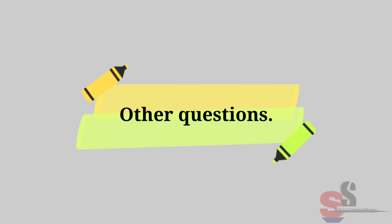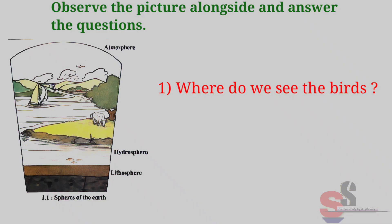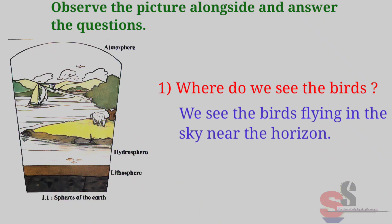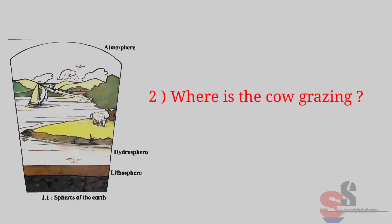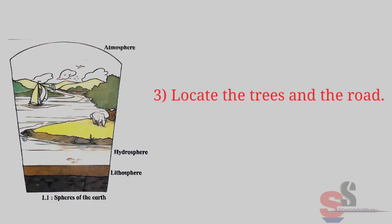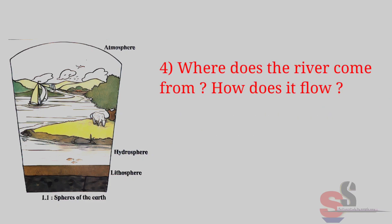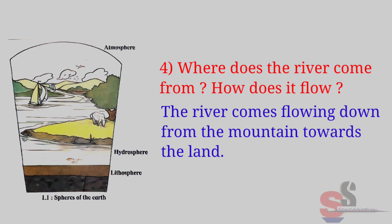Now we will see other questions from the textbook. Observe the picture alongside and answer the questions. 1. Where do we see the birds? Answer: We see the birds flying in the sky near the horizon. 2. Where is the cow grazing? Answer: The cow is grazing in the meadow. 3. Locate the trees and the road. Answer: The trees and the road are seen on land. 4. Where does the river come from? How does it flow? Answer: The river comes flowing down from the mountain towards the land.